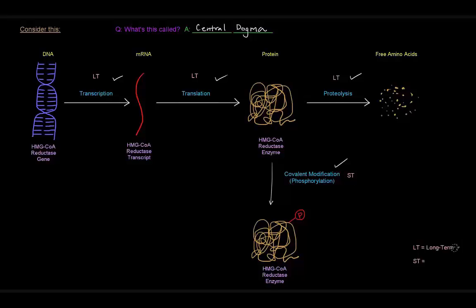So you notice these LTs and these STs here. The LT stands for long-term, and ST stands for short-term. So long-term regulation is going to focus on these three things: transcription of the gene, translation of the mRNA transcript, and proteolysis of the enzyme itself. Whereas covalent modification occurs very short-term.